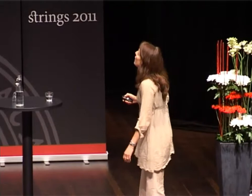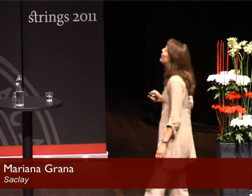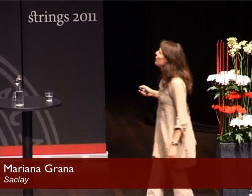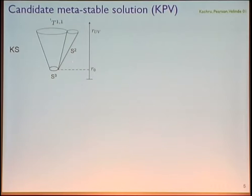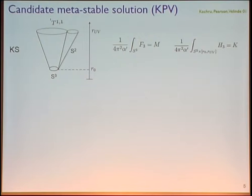Let me review a little bit of Klebanov-Strassler and the candidate metastable solution, KPV. Klebanov-Strassler is a solution on the deformed conifold. The deformed conifold is a cone over the five-dimensional space T^{1,1}, which is topologically S2 times S3. The S2 shrinks to zero size at the bottom, while the S3 has a finite size. This S3 has M units of Ramond-Ramond three-form flux, while there are K units of NS three-form flux on the dual cycle.